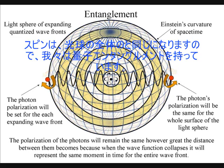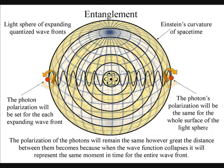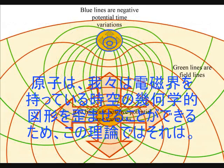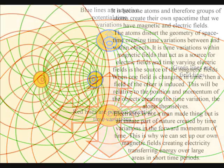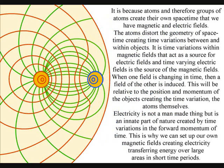In this theory it is because the atoms can distort the geometry of space and time that we have electromagnetic fields. It is time variations within magnetic fields that act as the source for electric fields, and time varying electric fields is a source of the magnetic fields.